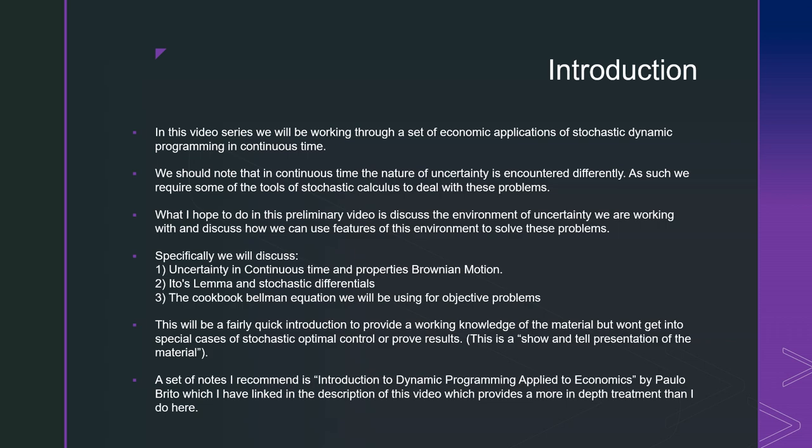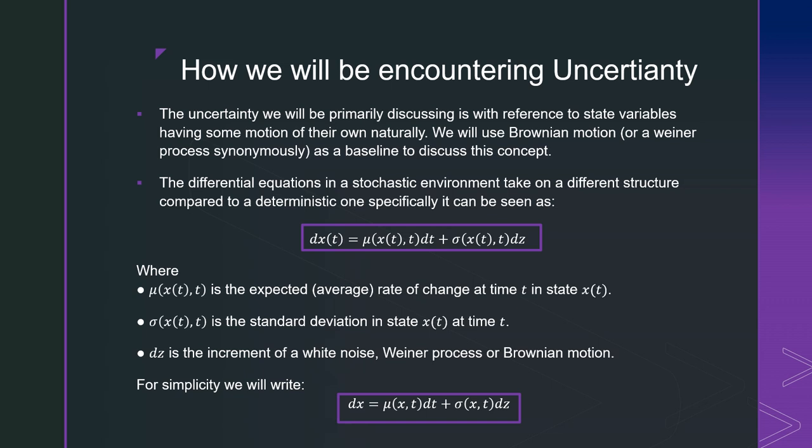The uncertainty that we will be primarily discussing is with reference to state variables having some motion of their own naturally. We'll use Brownian motion or a Wiener process anonymously as a baseline to discuss this concept. The differential equations in a stochastic environment could take on a different structure compared to a deterministic one. Specifically, it could be seen as the following: dx equals mu of xt dt plus sigma xt dz.